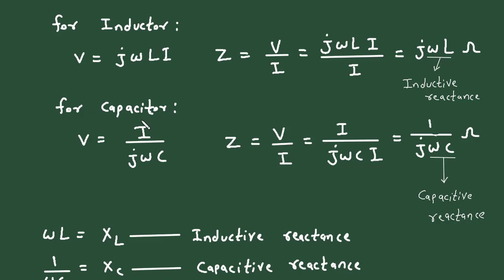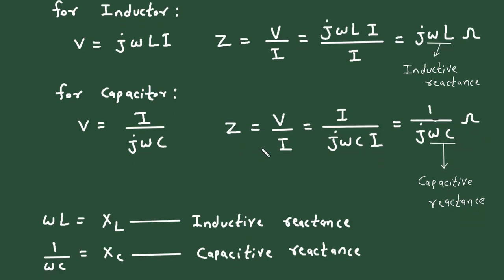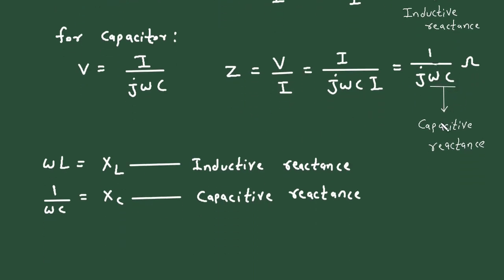For the capacitor, the voltage and current relationship is given by V is equal to I divided by J Omega C. If we substitute the value of voltage in the impedance formula, this will be I divided by J Omega C, divided by I. So this I and this I will get cancelled, giving 1 upon J Omega C. This 1 upon Omega C represents the capacitive reactance, represented by XC, and Ohm is the unit of this impedance.